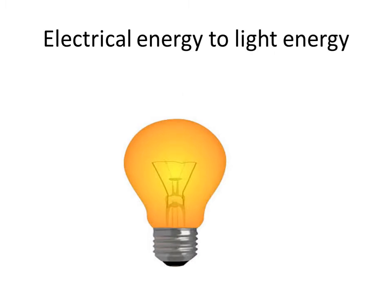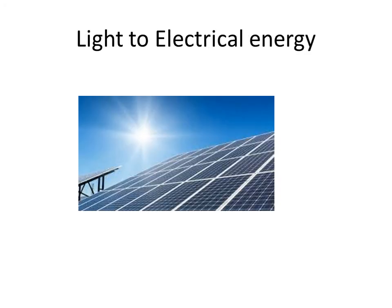Next, we have electrical energy to light energy. We have studied electrical energy to mechanical energy, electrical energy to heat energy, and now electrical energy to light energy. This conversion occurs when an electrical bulb glows due to electrical current flowing through it.